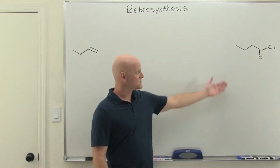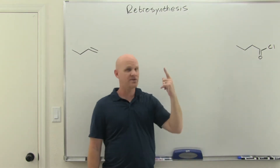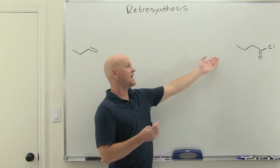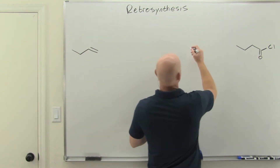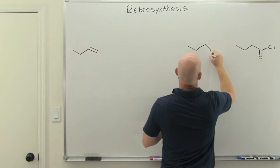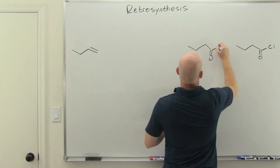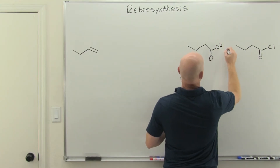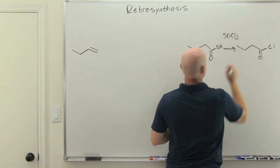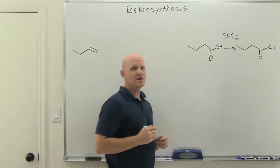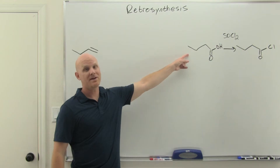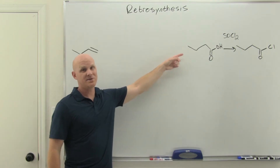In this case, we're going to make an acid chloride. We know exactly one way to make an acid chloride, and because there's only one way, we know exactly what the previous step was. The previous step would have been the corresponding carboxylic acid treated with thionyl chloride, SOCl2. That's the only way we know how to make an acid chloride, so our goal has to be to make this carboxylic acid.